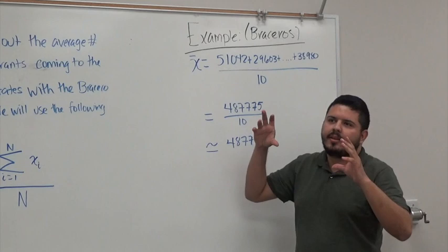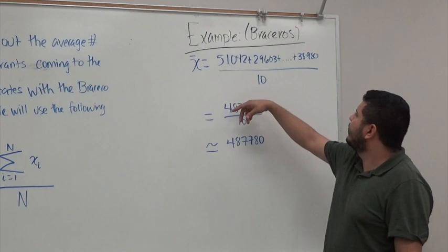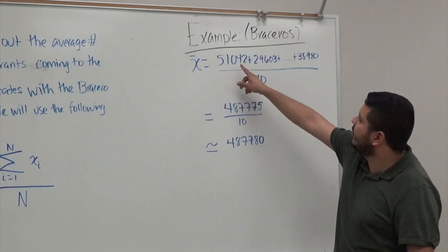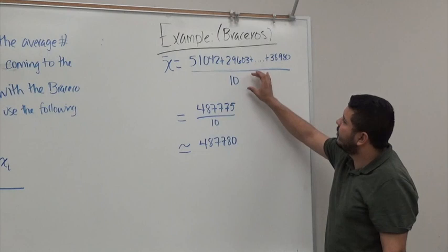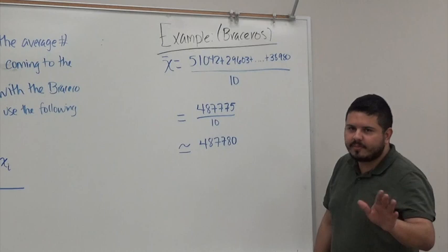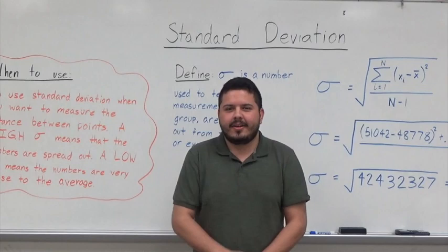Now let's look at the example in a more mathematical way. We have the first number of the data, which is 51,042. We add all the values of the given data all the way to the end, where you have 38,980. That whole value is divided by the total number of values on that list, which is 10. So it's 487,775 over 10, which rounded off is 487,780. Now that we've found the mean, let's talk about standard deviation.